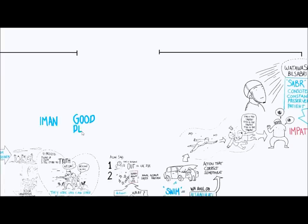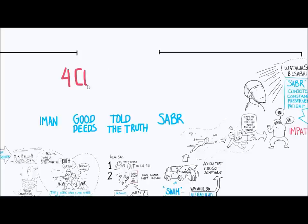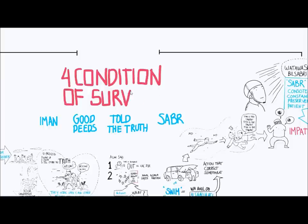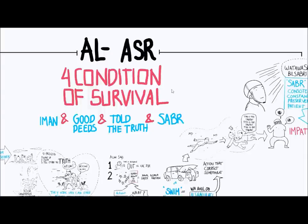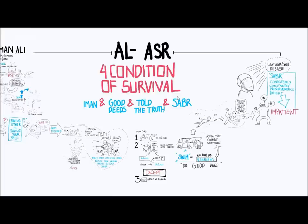So even if you had iman, and you had good deeds, and you told people about the truth, but you didn't have sabr, you still drown. So how many conditions do you have to fulfill to survive? All four. All four conditions are required. They're critical, and they're necessary, which is why there's a wa in between them. You see the logical progression from iman, wa 'amilu as-salihat, wa tawasaw bil-haq, wa tawasaw bis-sabr, beautifully articulated in this surah.